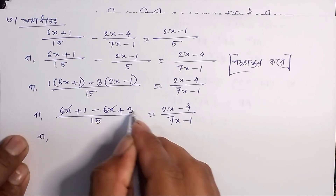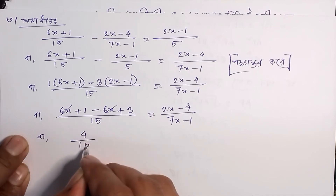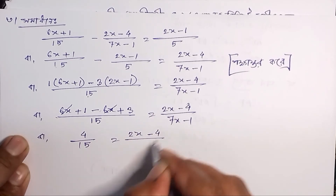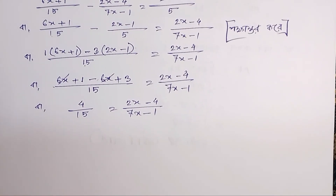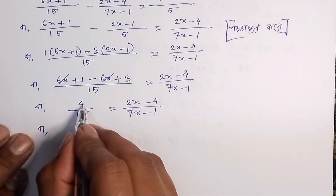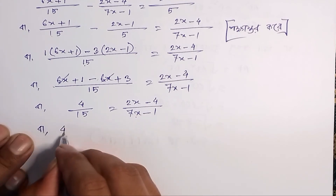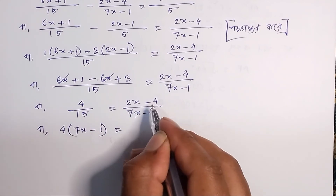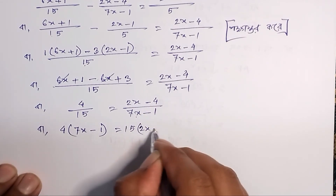So (1+1+3+4)/15 equals (2x-4)/(7x-1). Cross multiplying: (2x-4)/(7x-1) is equal to 15 divided by (2x-4), giving 15 divided by (2x-4).